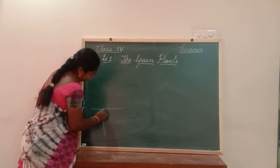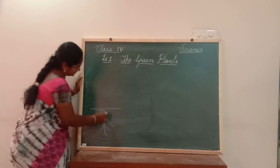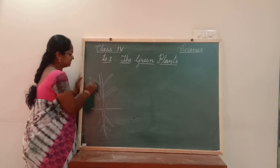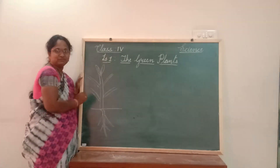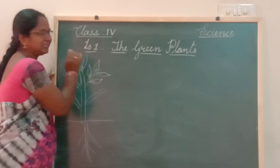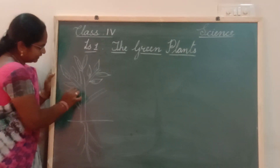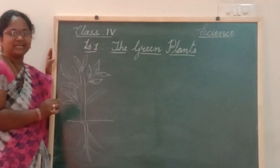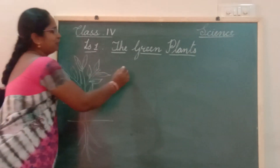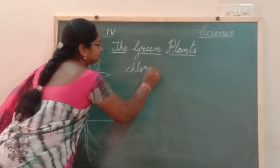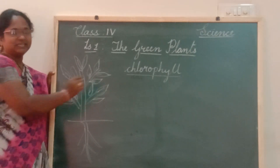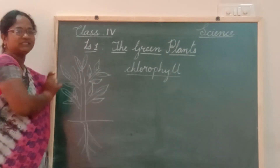Let us see the plant first. The plant has roots, a shoot system, and then branches. From the branches we have the leaves. You can see the leaf structures here. The leaves are green in colour. Why is the leaf green in colour? It is because of the pigment present in the leaf. The pigment is chlorophyll — this is the green colour pigment present in the leaf. This pigment is green in colour, so it makes the leaf green in colour.